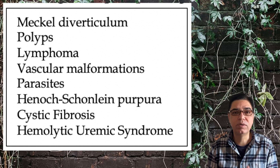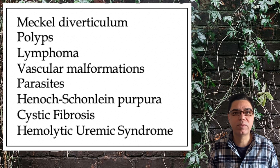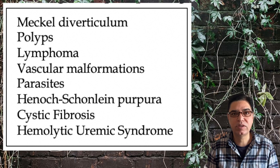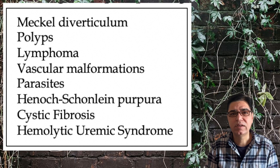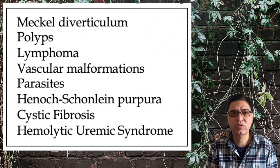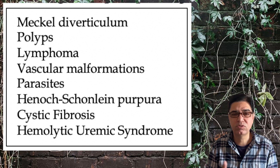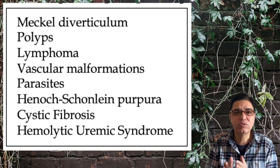Some parasites — especially Enterobius vermicularis, which are worm-like creatures living in the intestine — can cause intussusception in rare cases. HSP (Henoch-Schönlein Purpura), a vasculitis inflaming vessels inside the intestines, can act as a lead point as they swell up. Cystic fibrosis, an autosomal recessive condition of childhood causing repeated chest infections and exocrine pancreatic insufficiency, and haemolytic uraemic syndrome, can also sometimes lead to intussusception.